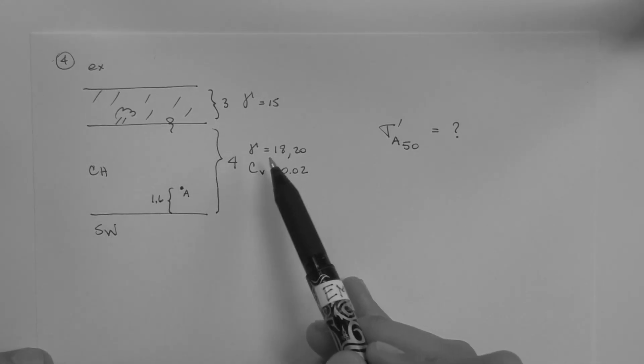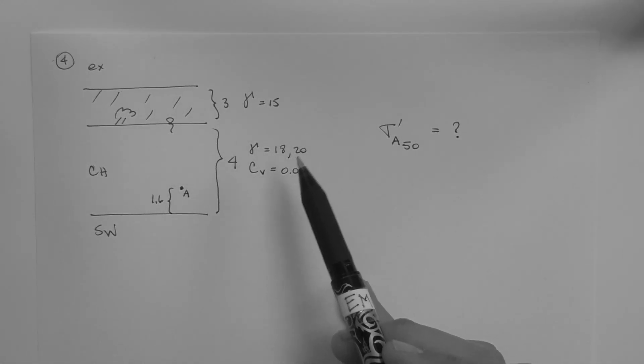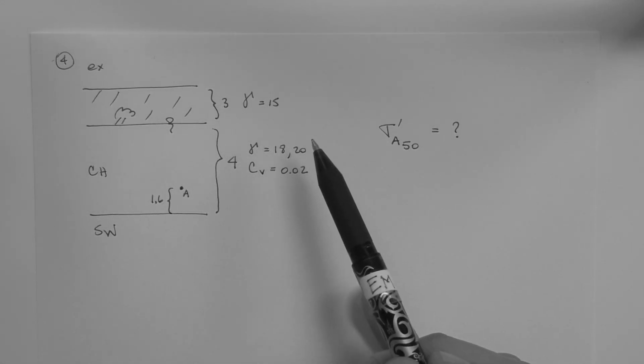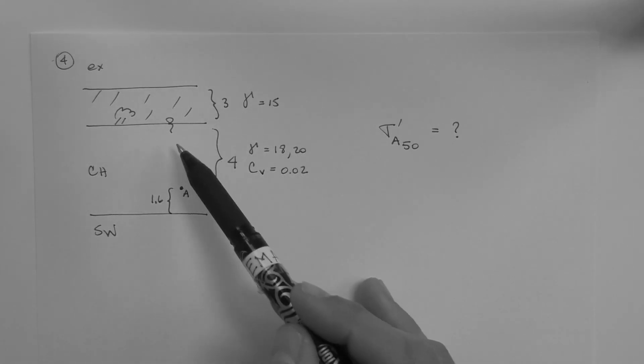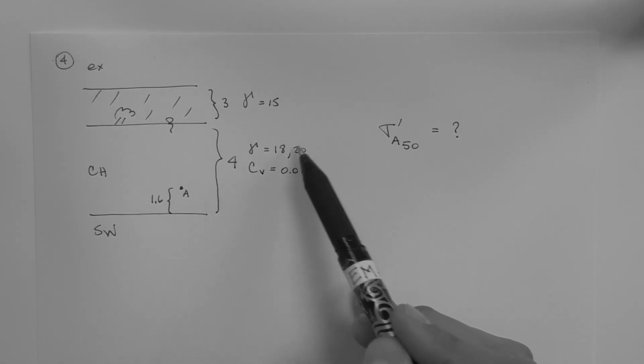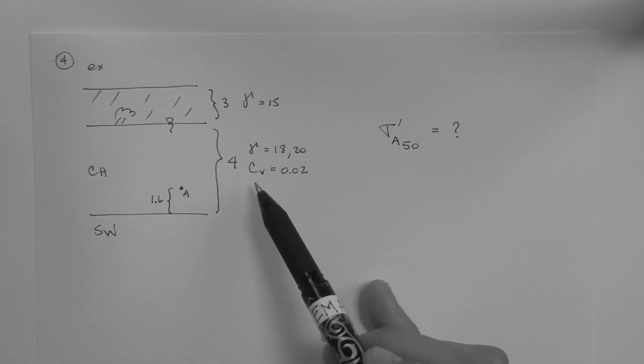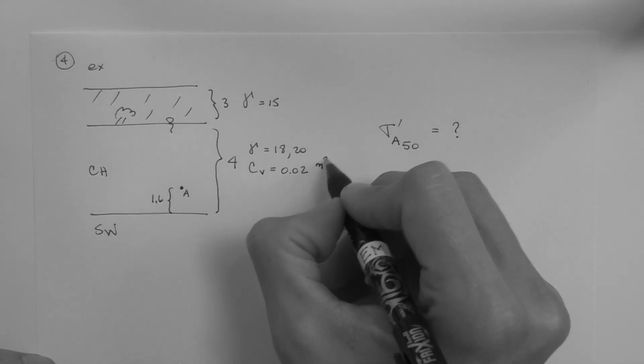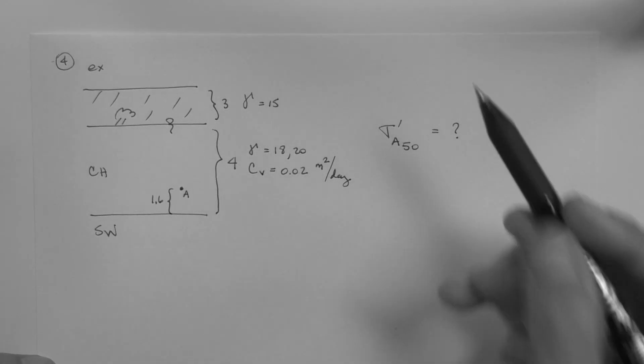Below the layer lies a well-graded sand. The layer has a unit weight of soil, when it's dry, of 18 and saturated 20 kN per meter cubed. Obviously it's saturated so this is the unit weight of the soil, 20. The coefficient of consolidation is 0.02 meters squared per day.